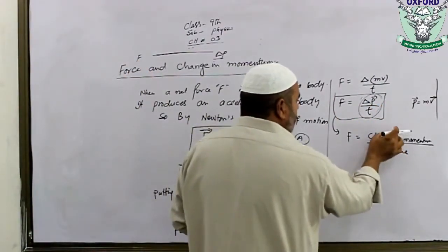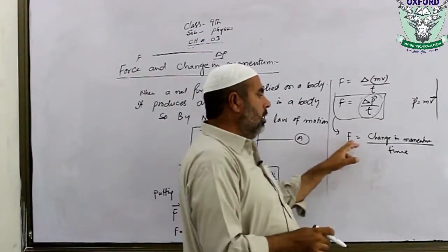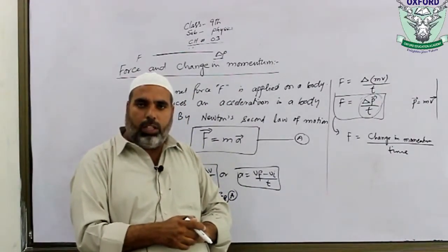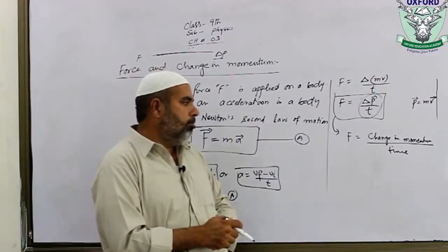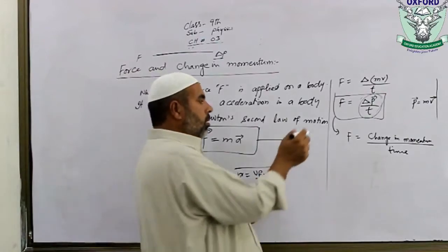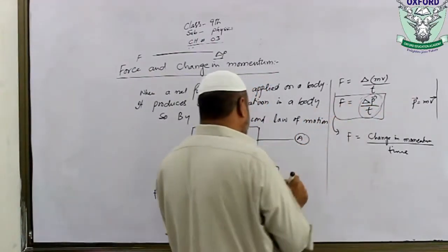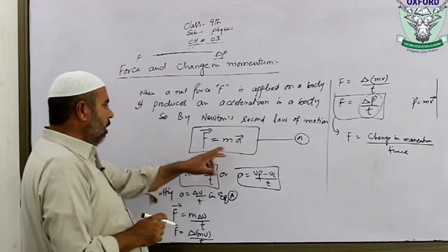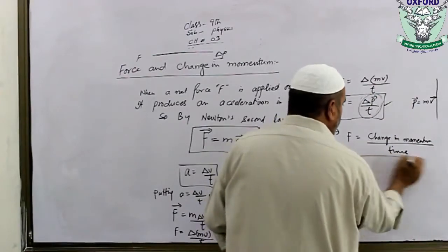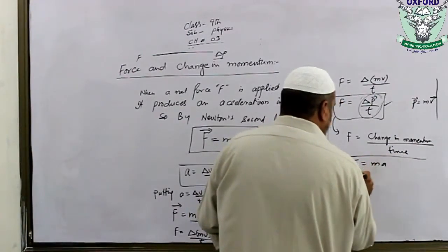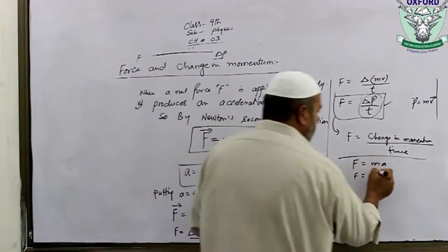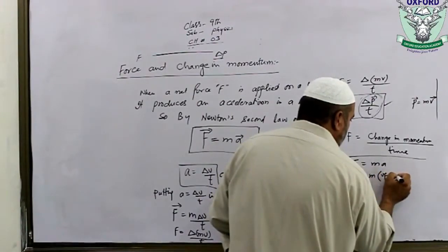The time rate of change of momentum is called force. So force is the rate of change of momentum. F equals MA. F equals M times (Vf minus Vi) over T.